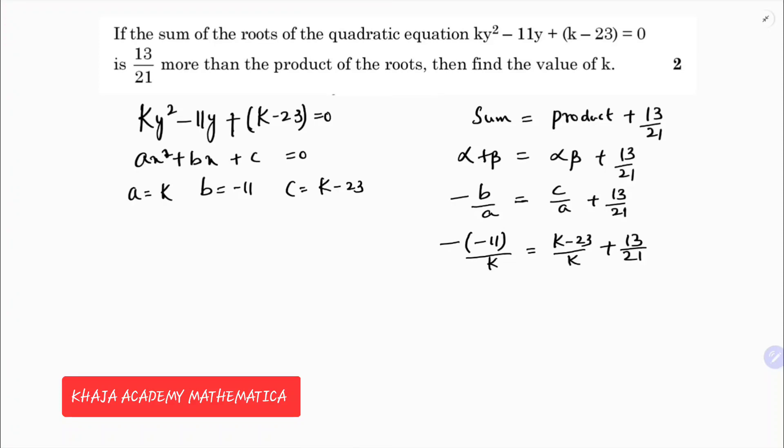So I need to find the value of k. So this value is 11/k. I will transpose this because like terms same denominator minus (k - 23)/k equals 13/21. If we simplify further, LCM is k, 11 here minus k minus of minus plus 23 equals 13/21.